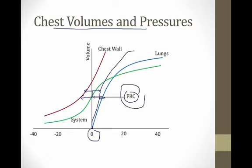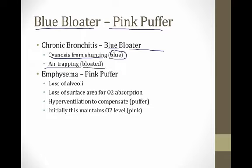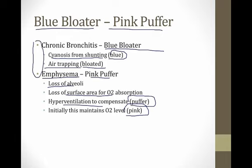There's a classic description of the different appearances of patients with chronic bronchitis versus emphysema called the blue bloater and the pink puffer. Patients with chronic bronchitis are the blue bloaters — they have cyanosis from shunting, making them blue, and air trapping making them bloated. Patients with emphysema are the pink puffers — they've lost alveoli and surface area for oxygen absorption, so they hyperventilate to compensate (hence puffers), and initially this maintains their O2 level making them pink. In reality, most patients have elements of both, but you should know this classic description.